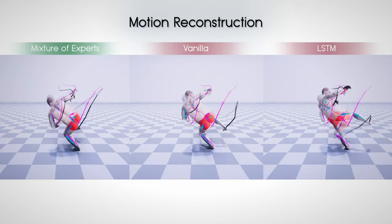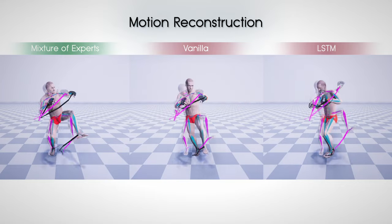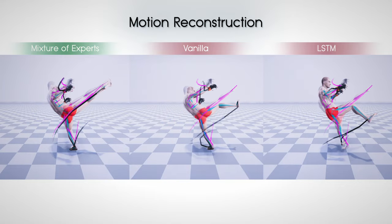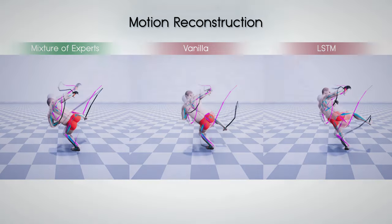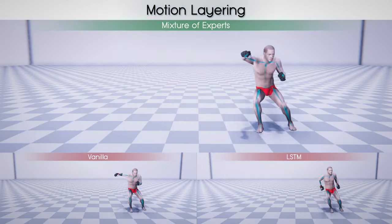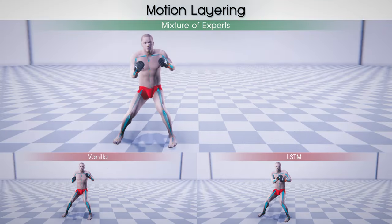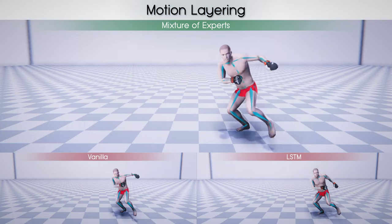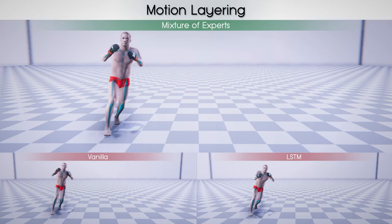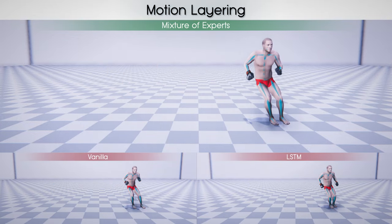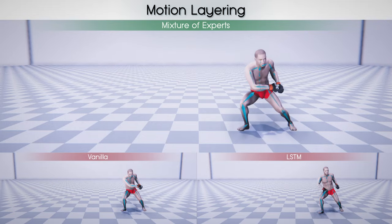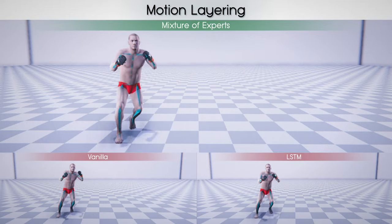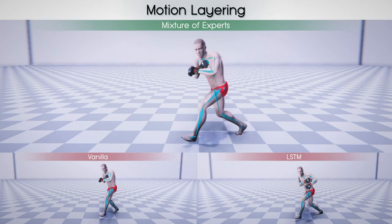Comparing with vanilla or LSTM architectures demonstrates that our Mixture of Experts framework can better follow detailed movements in the reference curves. Comparing those architectures for animation layering tasks, the Mixture of Experts framework can better generalize to novel control combinations and avoids producing jittering, drifting artifacts, or over-smoothed results.